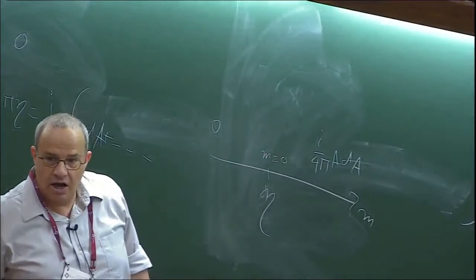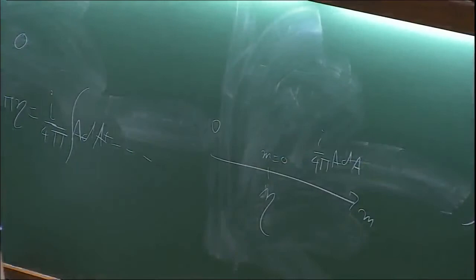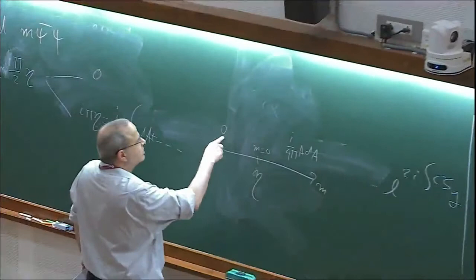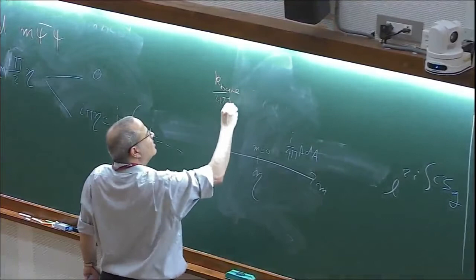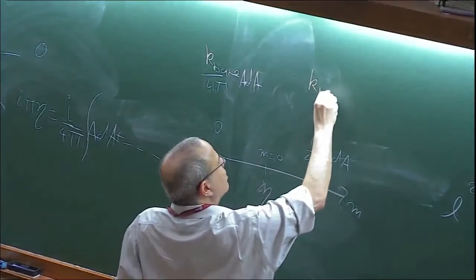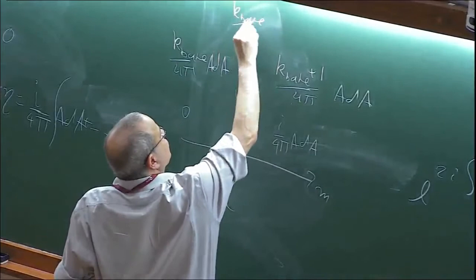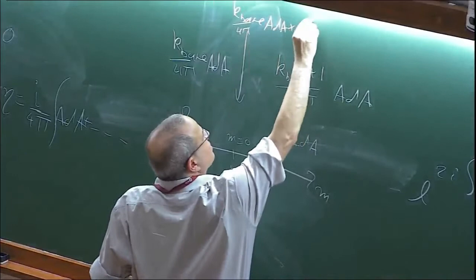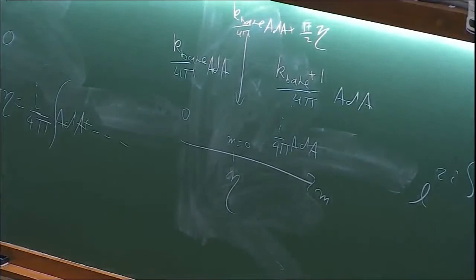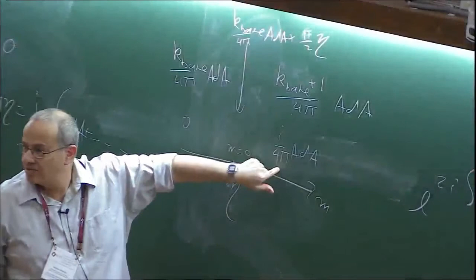Now I can come back to the earlier question. Imagine I use another regularization. I have to add a bare Chern-Simons term. So a bare Chern-Simons term would say that for negative mass we have some bare term k over 4π ADA, and for positive mass we have k plus 1 over 4π ADA. The freedom in regularization allows us to bring the whole thing up and down. But no matter how we do it, we'll never get the same answer on both sides. The fact that on the two sides we get different answers is the statement of this anomaly.